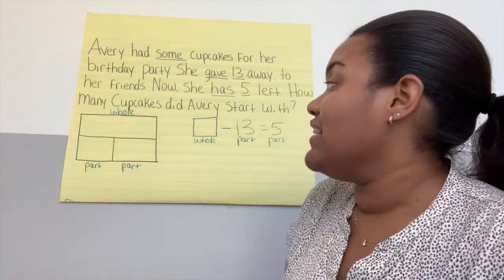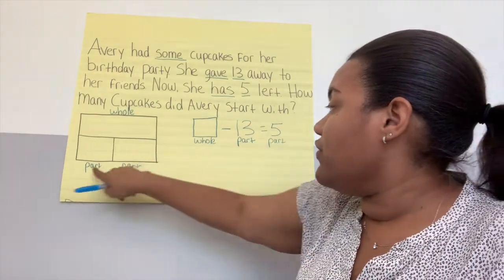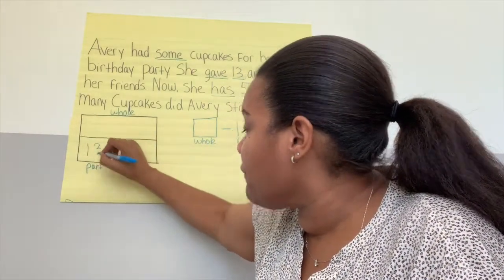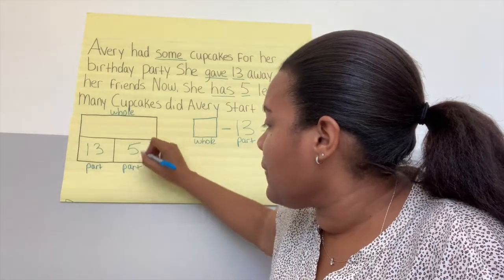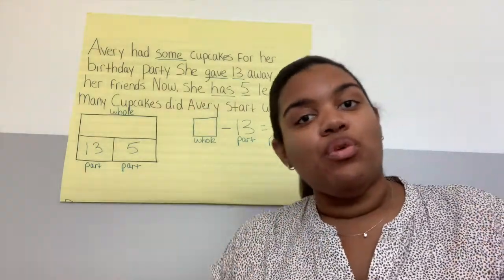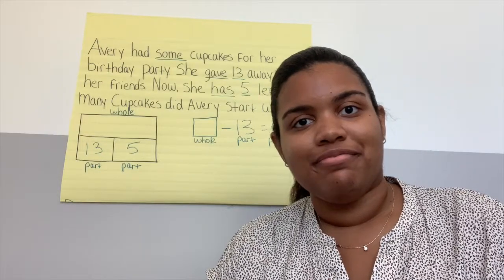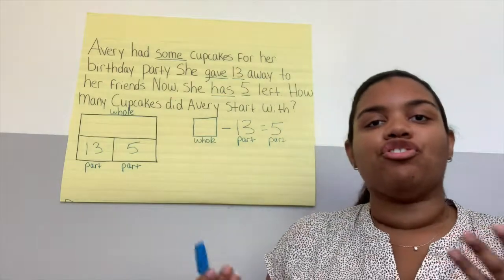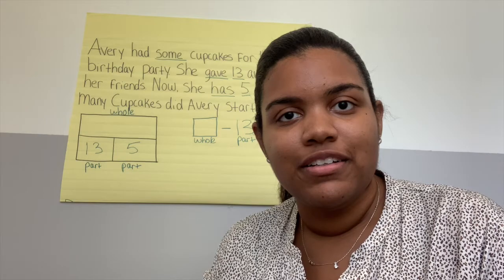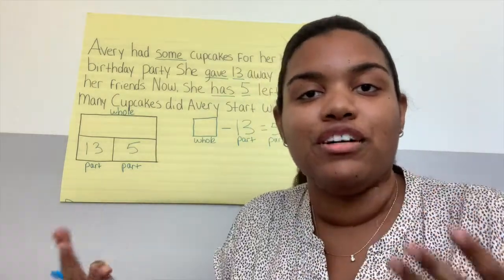Now we need to fill these in, and this should be pretty simple because we labeled. So we know this part has to be 13. And what's our other part? Five — you've got it. Now get ready — we're doing step three. What is step three? What strategy have we been using? Yes, we've been using the counting-on strategy. You start with the number and you count on until you find the total.